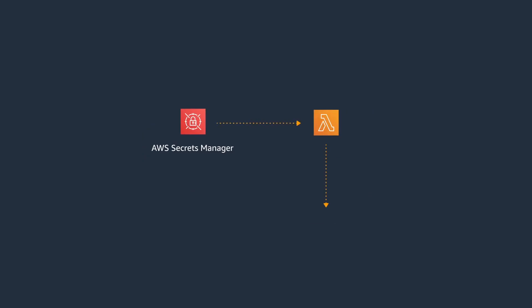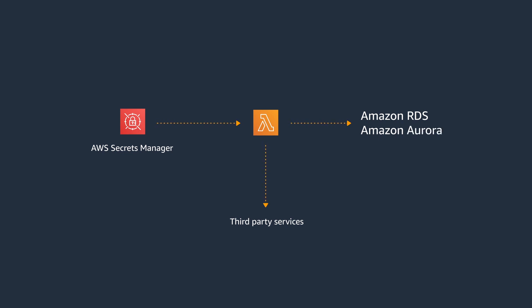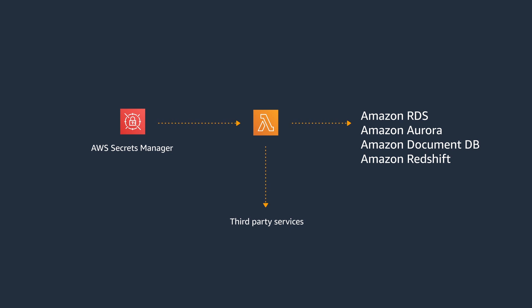Now that storage and retrieval of the secret is set up, let's take a look at the second security best practice, which is to audit and rotate the secrets periodically. Periodic rotation of secrets is really important from a security perspective. If you don't change your secrets for a long period of time, the secrets become more likely to be compromised. We recommend that you regularly rotate your credentials. You can configure Secrets Manager to automatically rotate without any manual intervention and on a specified schedule. Secrets Manager uses AWS Lambda functions to rotate the credentials. Out of the box, it comes fully configured with ready-to-use rotation support for Amazon RDS databases, Amazon Aurora, Amazon DocumentDB, and Amazon Redshift. If you need to rotate credentials for any other service, you can also define and implement rotation using a custom AWS Lambda function.